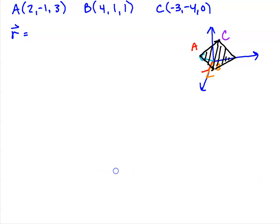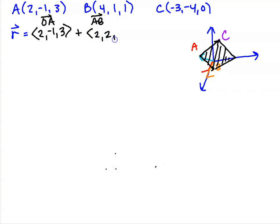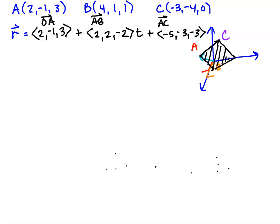So the vector equation: we go out to A, which is the vector (2, -1, 3). Then the vector from A to B is (2, 2, -2), scaled by parameter t. The vector from A to C is (-5, -3, -3), scaled by parameter s. So our vector equation for the plane is R = (2, -1, 3) + t(2, 2, -2) + s(-5, -3, -3). We confirm these points are non-collinear.